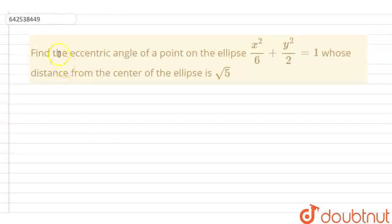Hello everyone! Today the question is: Find the eccentric angle of a point on the ellipse x² upon 6 plus y² upon 2 equals 1 whose distance from the center of the ellipse is root 5.